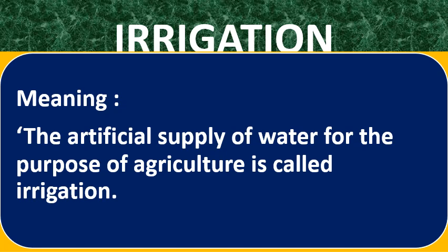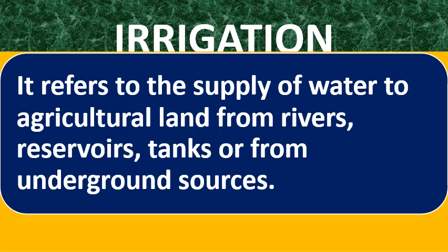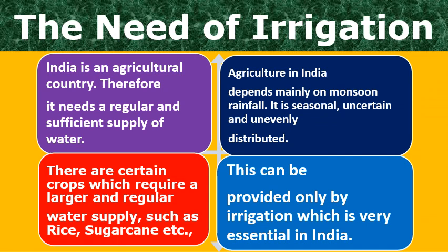Let us know about irrigation. The artificial supply of water for the purpose of agriculture is called irrigation. Irrigation refers to the supply of water to agricultural land from rivers, reservoirs, tanks, or underground resources. India is an agricultural country and therefore it needs a regular and sufficient supply of water. Agriculture in India depends mainly on monsoon rainfall, but unfortunately this monsoon is seasonal, uncertain, and unevenly distributed — therefore irrigation is needed. There are certain crops which require larger and regular water supply, for example rice and sugarcane, which is why irrigation has become very important in agricultural activity.